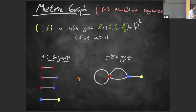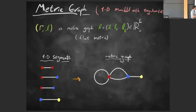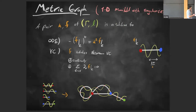By a metric graph I mean a one-dimensional manifold with singularities. We have a bunch of one-dimensional segments and we glue them — the colors indicate the gluing — according to a certain graph structure. The metric on each edge is flat, essentially described by the edge lengths, a bunch of positive numbers. I'll write (γ, l) where γ is the graph and l is the metric.